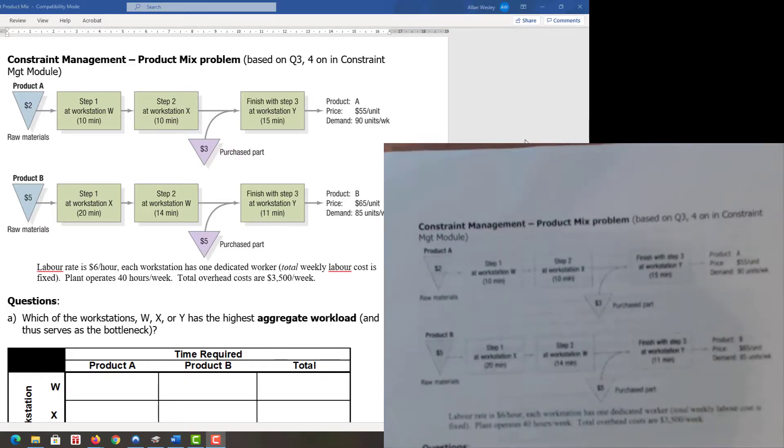Let's do a constraint management product mix problem. We have an arrangement of processes for product A and product B, with successor and precedent relationships similar to project management. Remember, project and process are the same things to us.